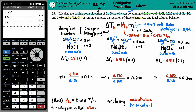So for NaCl we multiply by i = 2, for Na2SO4 we multiply by i = 3, and for MgCl2 we also multiply by i = 3. Let's do the math and get the ΔTb for each one.